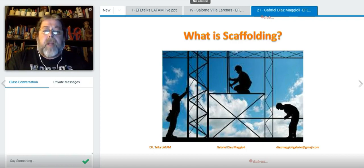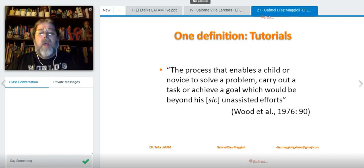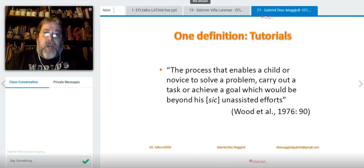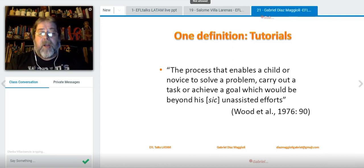But scaffolding is not only that. The first definition appeared in 1976 in an article by Wood, Brunner and Ross. They were talking about tutorials, and of course a tutorial interaction is generally one teacher working with one student, helping them solve a problem. They define scaffolding as the process that enables a child or novice to solve a problem, carry out a task, or achieve a goal which would be beyond his—this is 1976, no politically correct language—unassisted efforts. Well this definition took a little bad rap because what these guys were saying is, well, let's make things easy for them so that they can do the job, so they can solve the problem, fulfill the task, whatever. Why not?